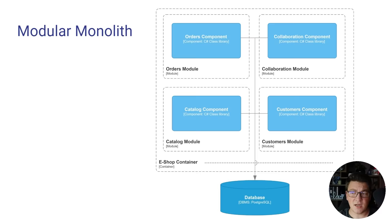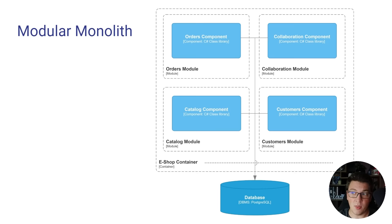But do these boundaries actually have to be physical, ending up with a distributed system? The answer is no, and this is how you implement a modular monolith. What we had as individual services in a microservices architecture are now modules inside a single monolith system. The boundaries are still there and clearly visible around each module, but in this case they are logical because we are in the same deployment unit — running inside the same application.